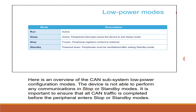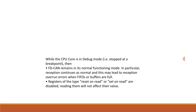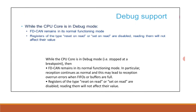Regarding debug support: while the CPU core is in debug mode, FD CAN remains in its normal functioning mode. Registers of type reset-on-read or set-on-read — reading them will not affect their value. In particular, reception continues as normal, which may lead to reception overrun errors when FIFOs or buffers are full.